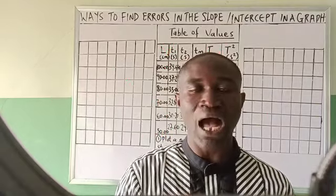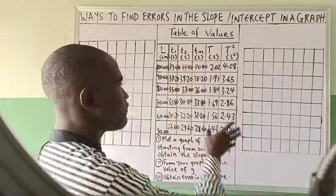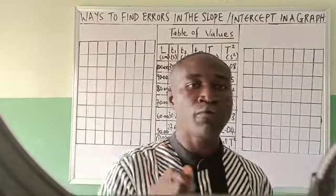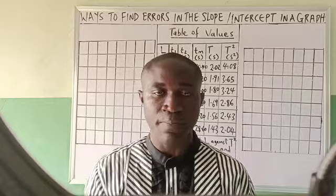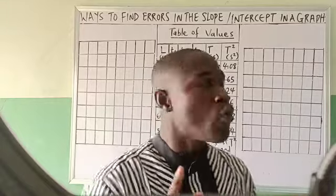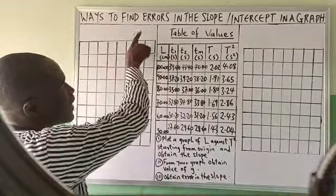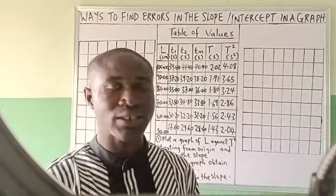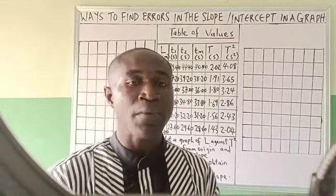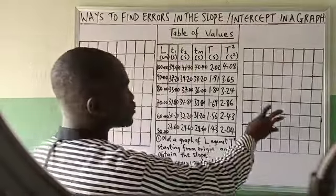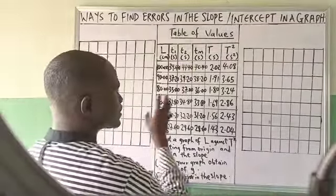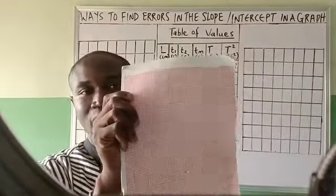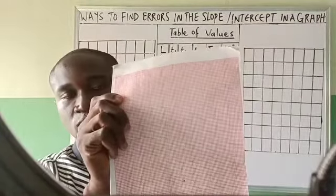We want to see how to plot graphs using the table of values we got from experiments on a simple pendulum. Afterwards, we want to see ways to find errors in the slope or intercepts in a graph. That is very important. This is just a typical sketch of how graphs look like, but look at how a standard graph is meant to look like.